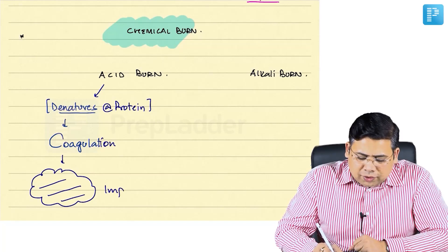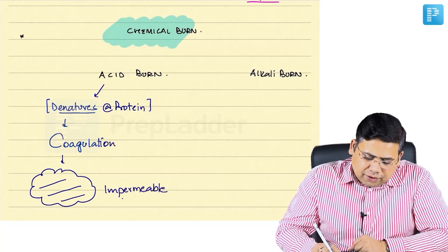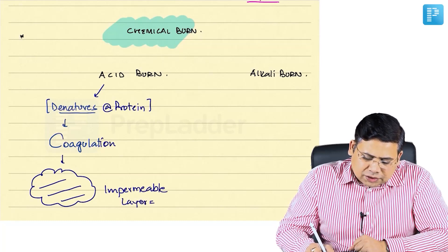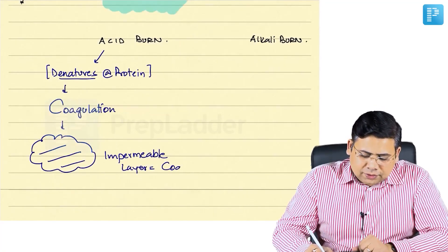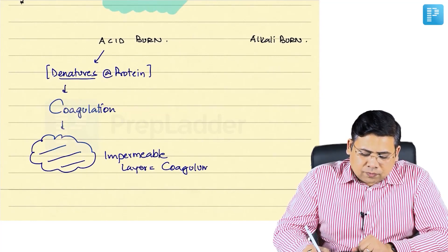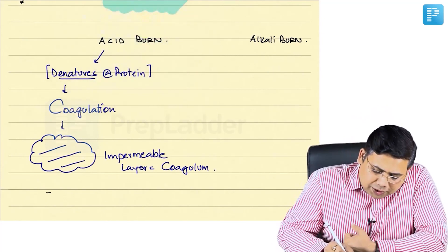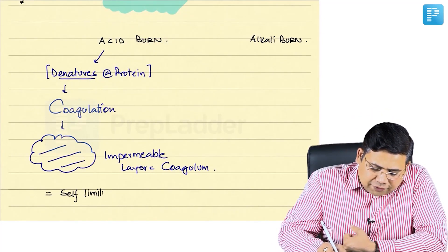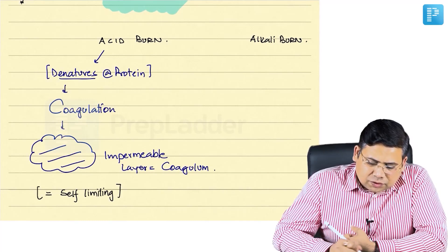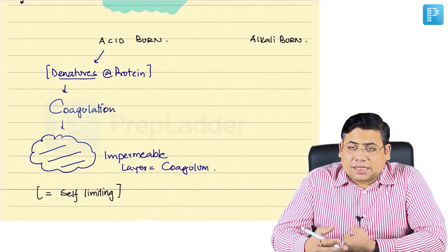This coagulation results in an impermeable layer, known as coagulum. Since it is impermeable, this process will be self-limiting. That is the concept of acid burn.